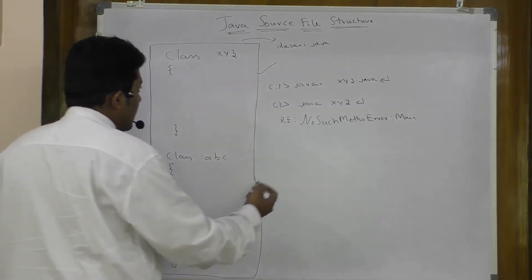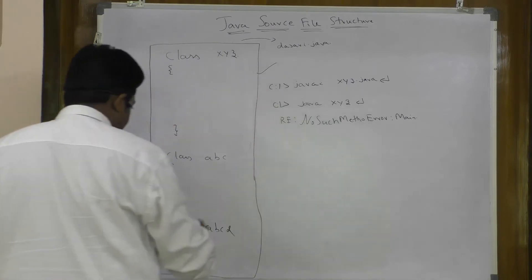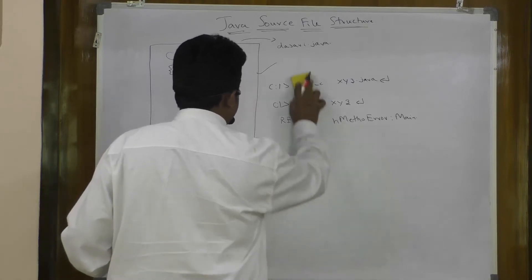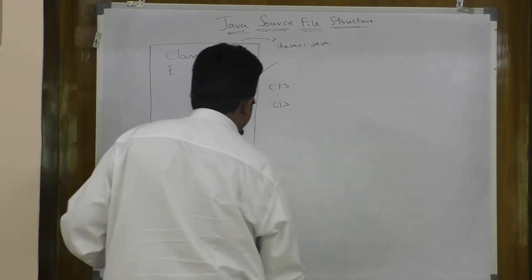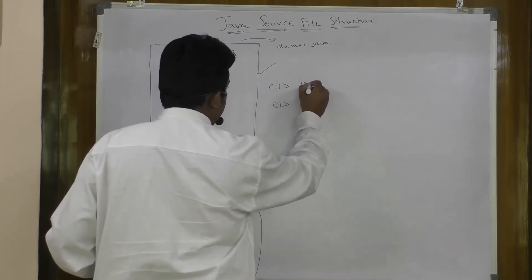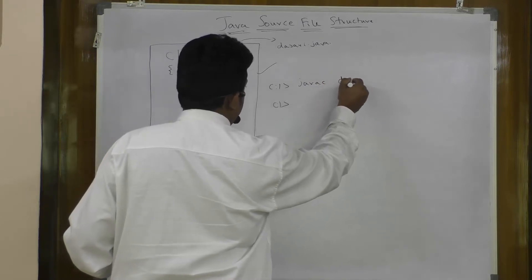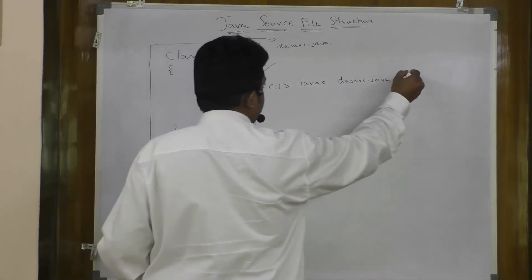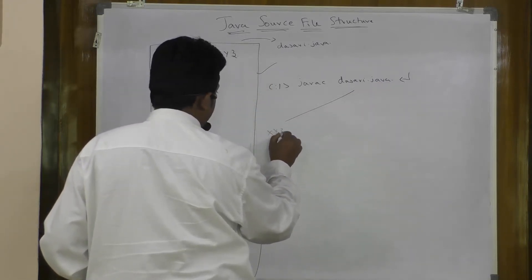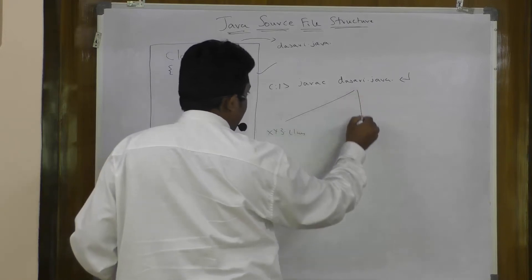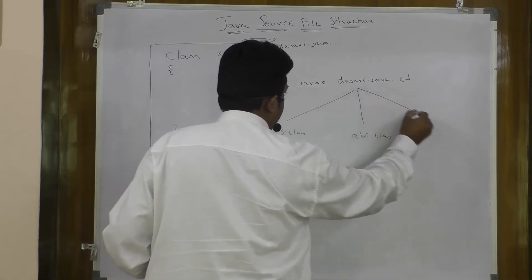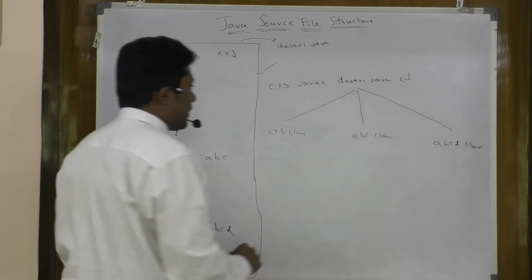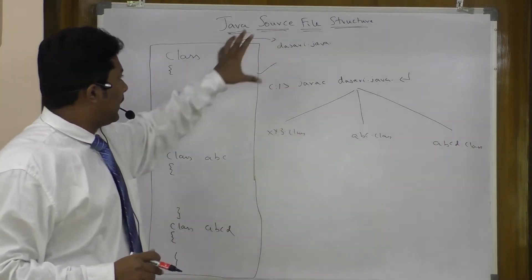There is a restriction when a class is declared as public, which we will look into shortly. When you compile that Java source file — for example, 'javac Dasari.java' — all corresponding .class files will be generated: XYZ.class, ABC.class, and ABCD.class. Three different .class files are generated from one source file.